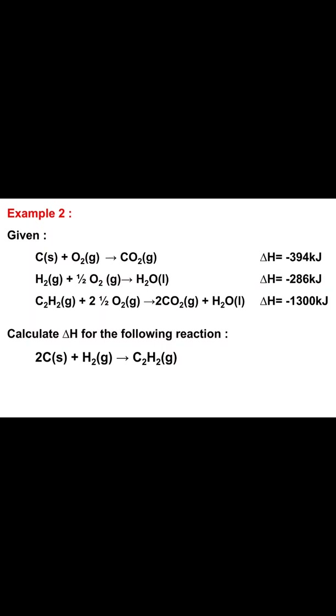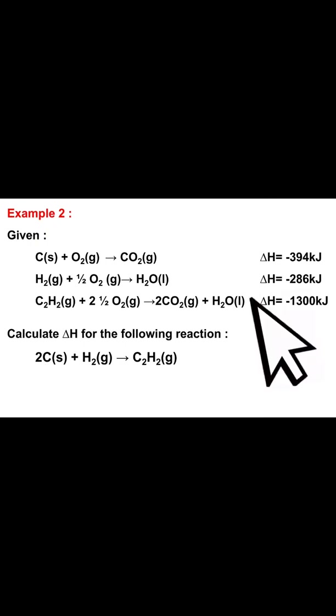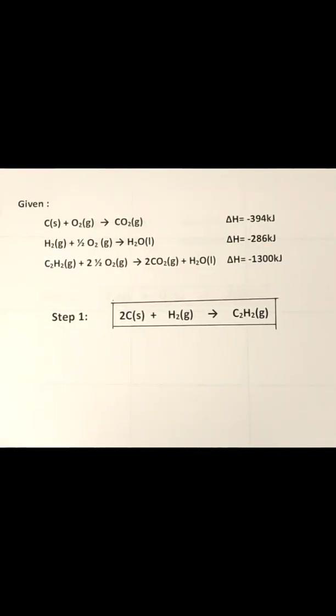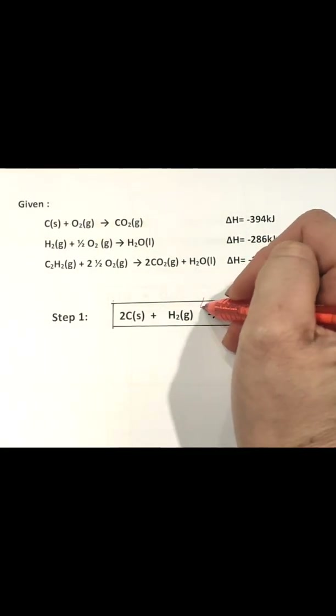Now we go to the second example: calculate the enthalpy change of these equations by referring to the data given. The first step is to write down the thermochemical equations and include the symbol for enthalpy change of the reactions. Now let's see how we are going to use the data given to draw the energy cycle. It is clear that we need to look for the enthalpy change of the reaction.